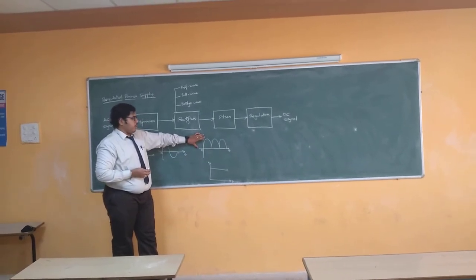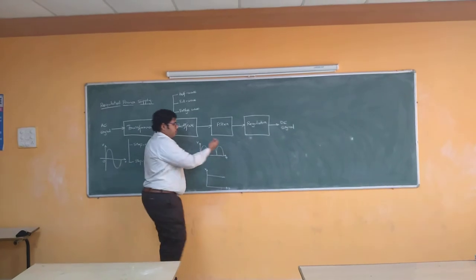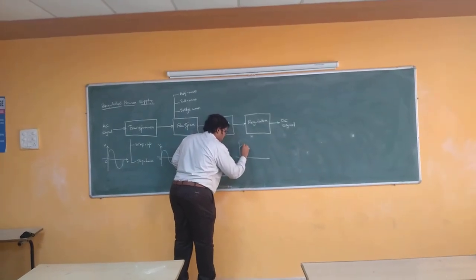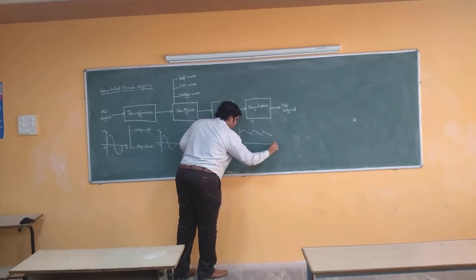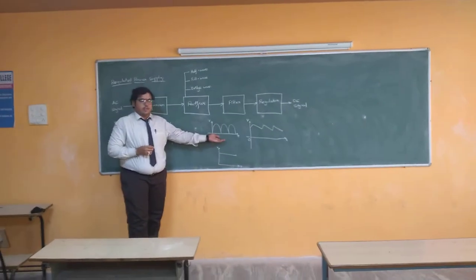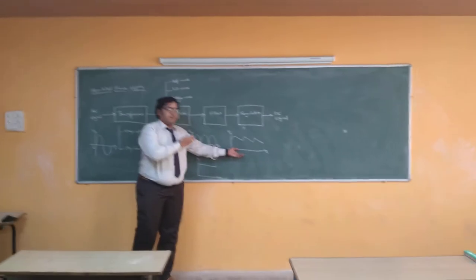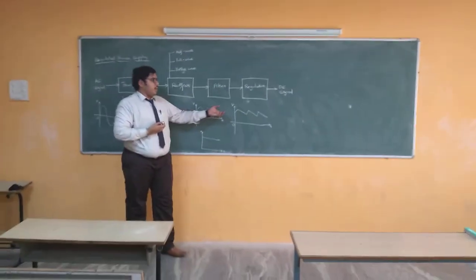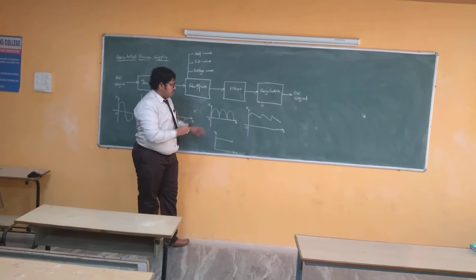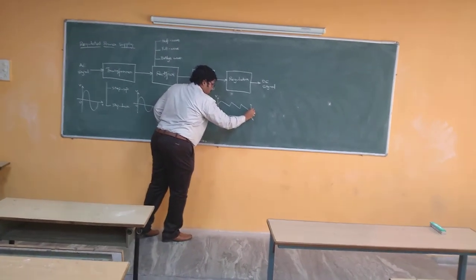We are connecting this particular signal to a filter circuit so that the particular ripples can be reduced as much as possible. The approximate output of a filter circuit — when this pulsating DC signal is given to a filter device, the filter converts this pulsating DC into another pulsating DC signal, but the main difference is that the ripples present in this signal are very much filtered or attenuated. This is the complete ripple produced by the rectifier, and this particular ripple is being reduced by the filter.